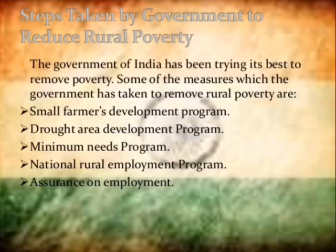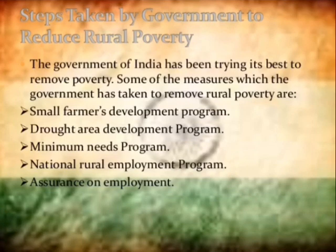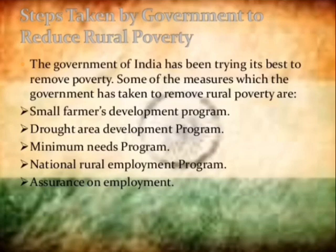The Employment Assurance Scheme ensures that if a person is unemployed, they will either be provided with employment or be compensated through unemployment allowance, subsidies, or other forms of support, helping the rural poor through these government steps to reduce rural poverty.